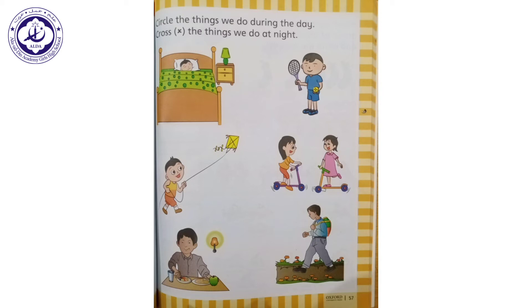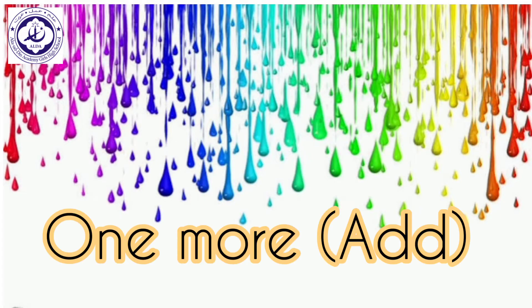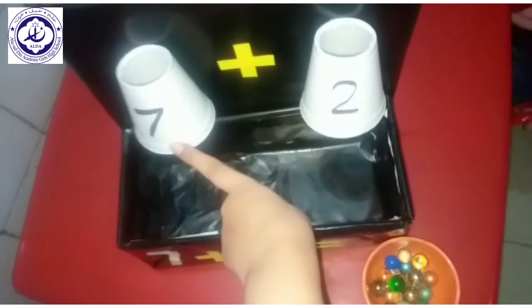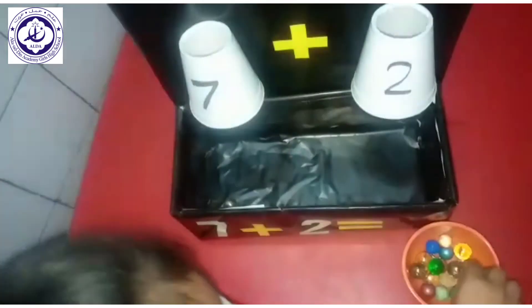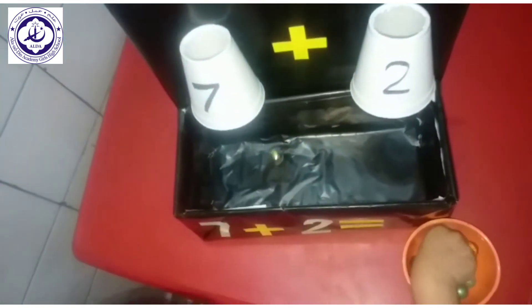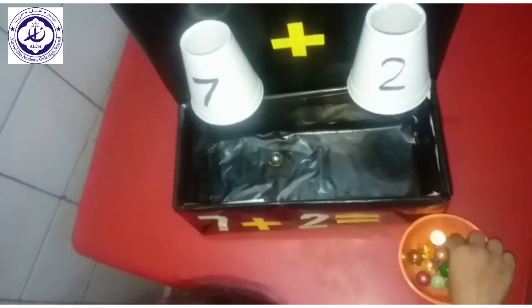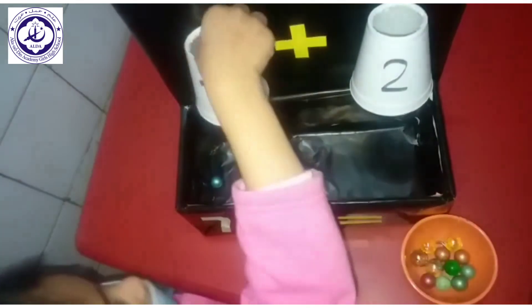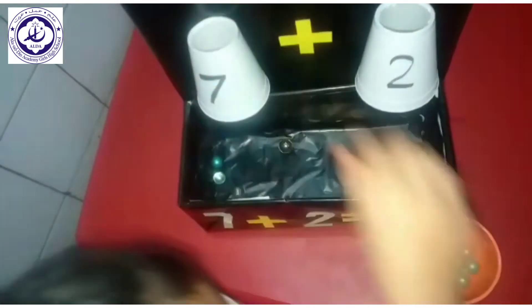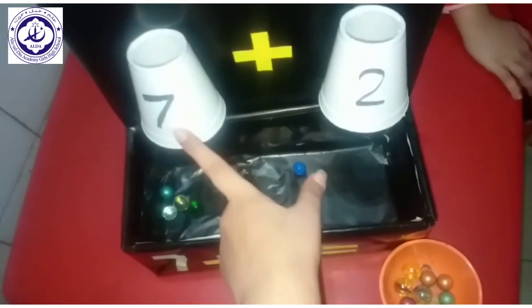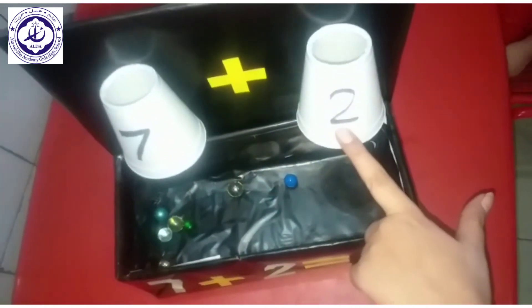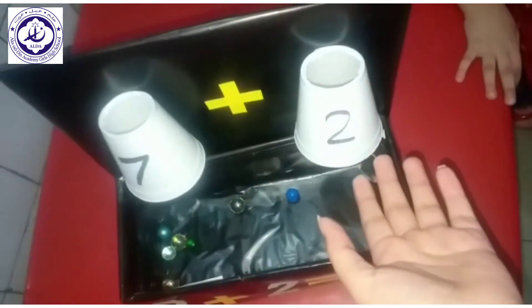Now on page number 57, circle the things we do during the day and cross out the things we do at night. Our next concept is one more — add. Which number is it? It's 7. Put 7 marbles in the box: 1, 2, 3, 4, 5, 6, and 7. Which number is it? It's 2. Put 2 marbles in the box.